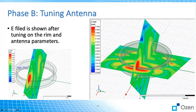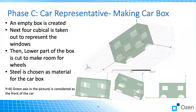Once we are happy with the result, we start adding the car box to represent the car. For that, we add just a cube, cut two sections out of it for the windows, and took this part to put the wheel. We ignored the front and rear windshield or the sunroof — you can add all those details, but for now we just make the box with this geometry for the simulation.